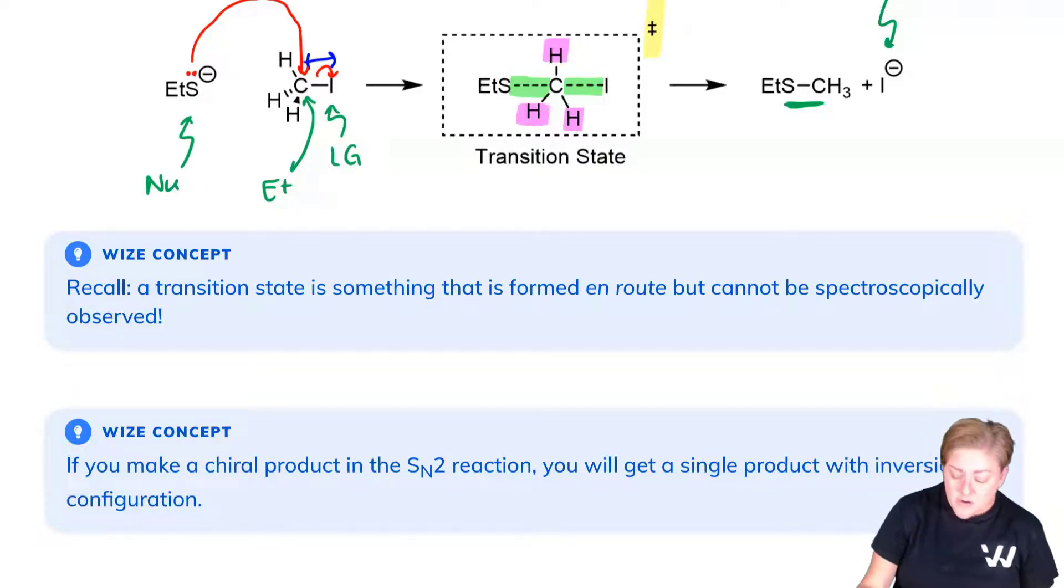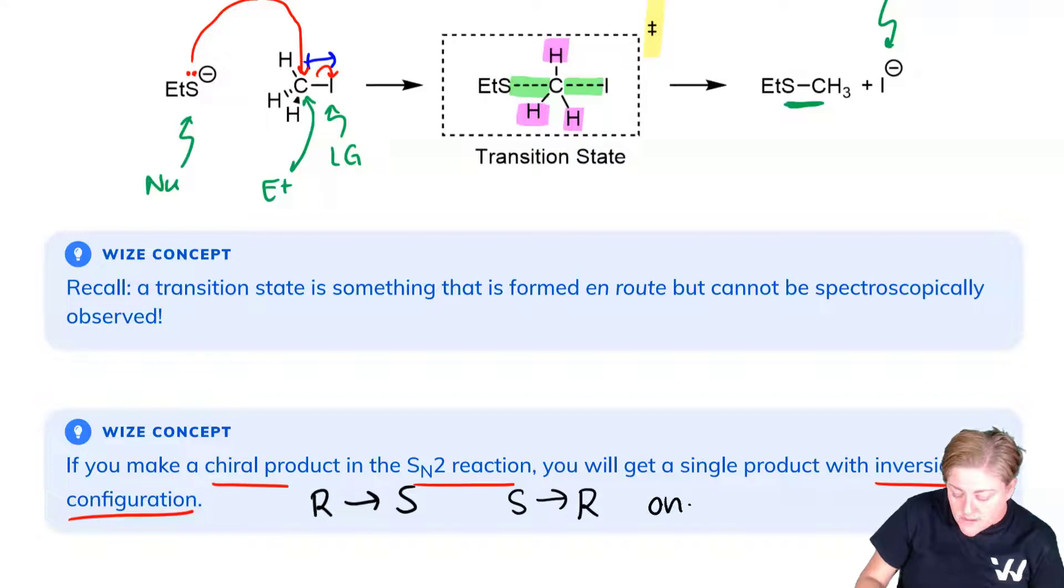If you are to make a chiral product in the SN2 reaction, you will get a single product with inversion of configuration. Which is to say that if you started as R, you would go to S, and if you started as S, you would go to R. You would get one product.